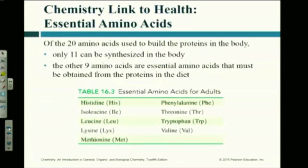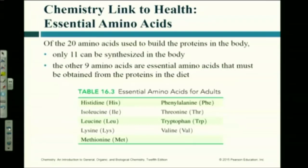The nine essential amino acids must be obtained from your diet. Vegetarians or vegans have to be very careful about this. For example, beans and soy products provide a lot of these essential amino acids. The difference between vegetarian and vegan is that vegans don't eat any animal products — no dairy, no cheese, no milk — only plant products.